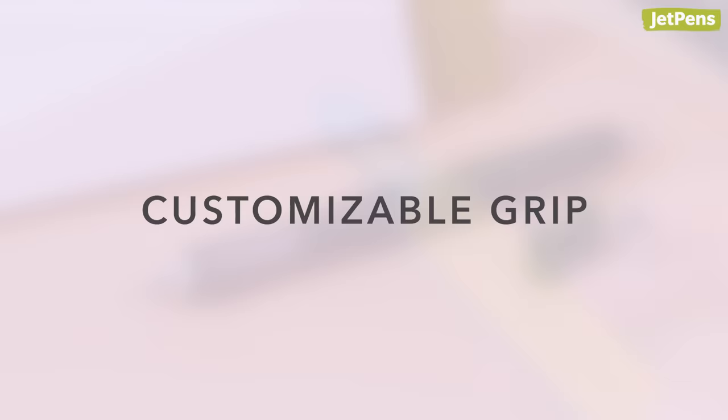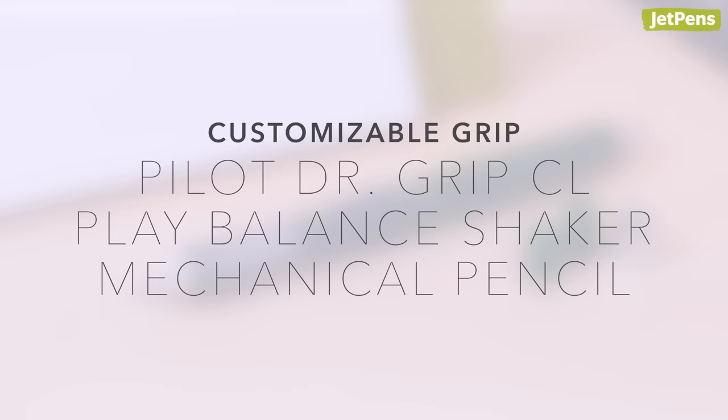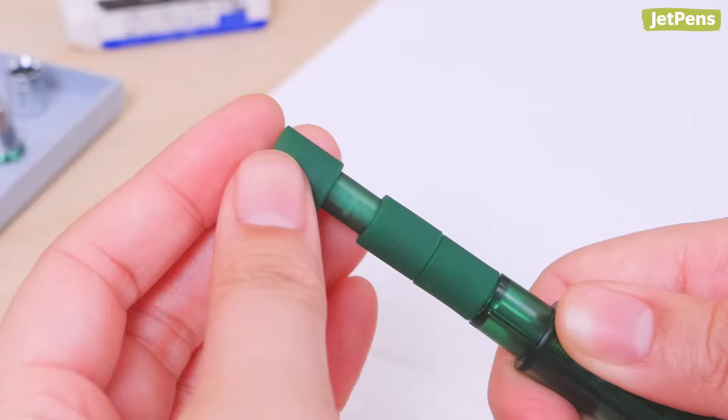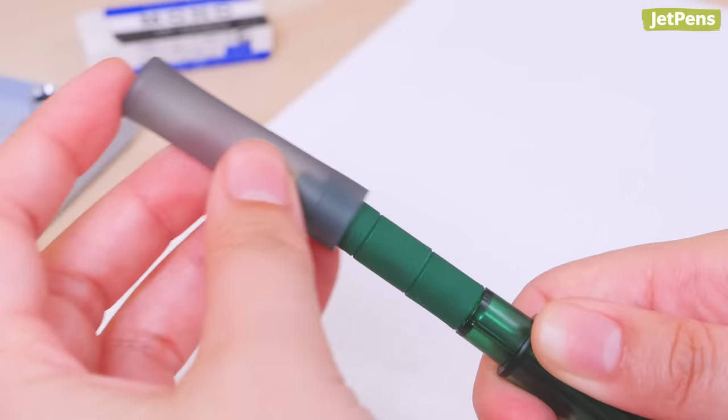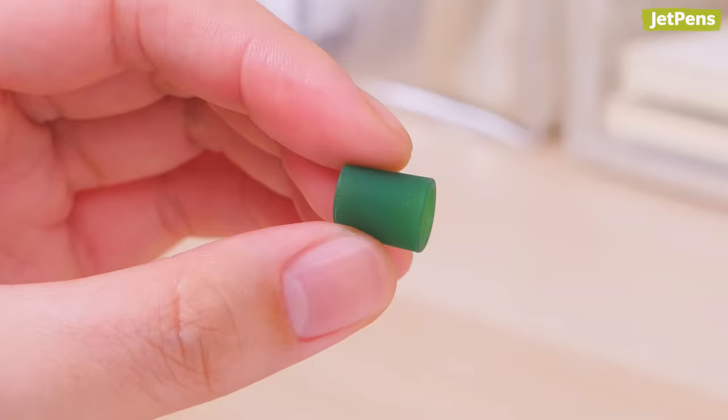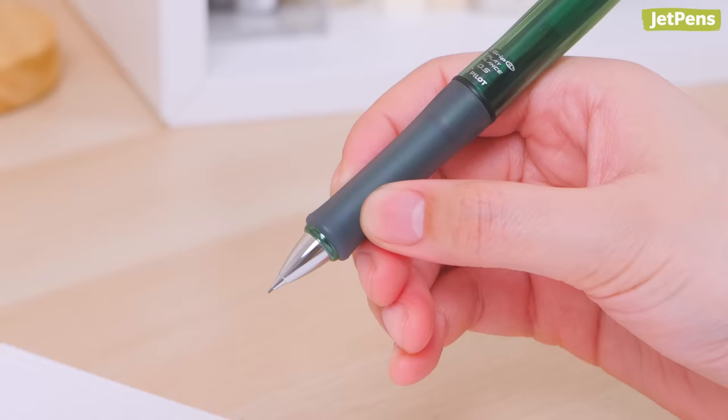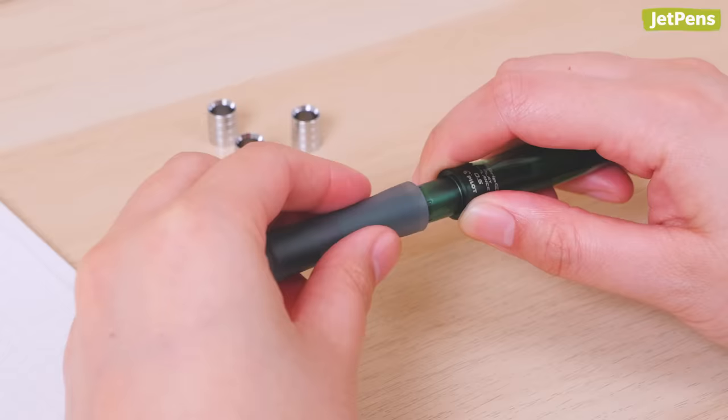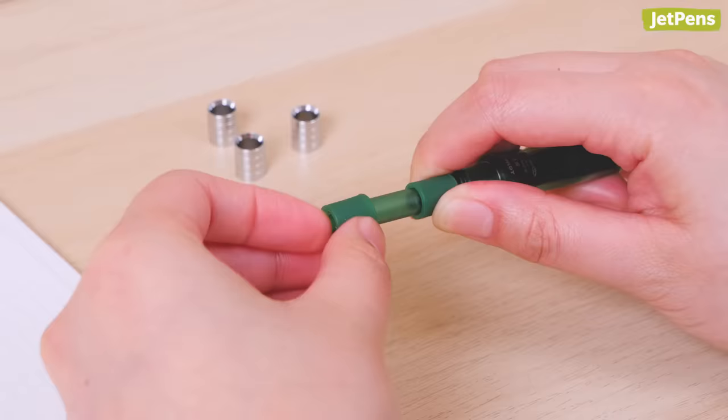Customizable Grip Pilot Dr. Grip CL Play Balance Shaker Mechanical Pencil. Fully customize your writing experience with the ergonomic Pilot Dr. Grip CL Play Balance. It includes grip sections made of silicone or metal that allow you to set your preferred weight and balance. The silicone parts reduce weight and provide a cushion grip, while the metal ones produce a firmer grip and weighted writing experience. There are eight possible weight and center of gravity combinations.